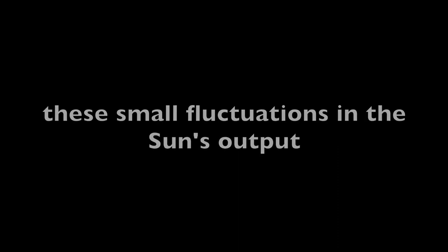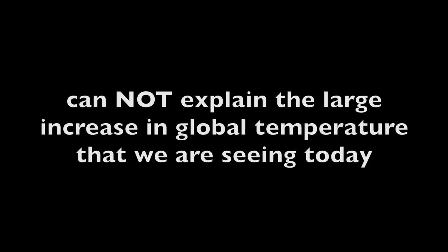The sun releases more energy when there are a lot of sunspots and less when there are fewer. But when there is a solar maximum, the sun's energy output increases by only about 0.15 percent and that's a tiny bit. Most scientists agree that these small fluctuations in the sun's output cannot explain the large increase in global temperature that we are seeing today.